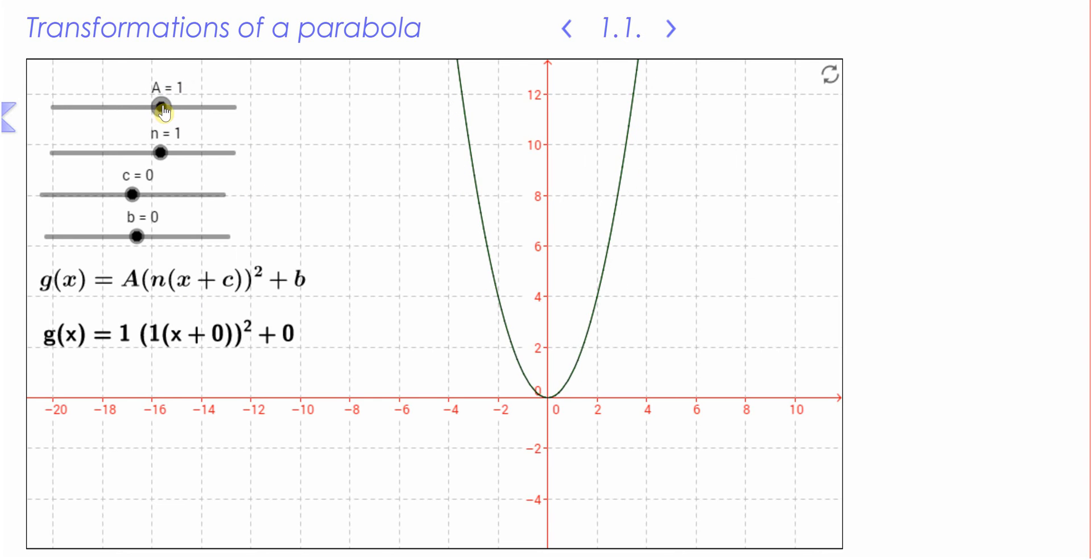As I said before, if it's negative, there's just a reflection in the x-axis. Let's go on to n.